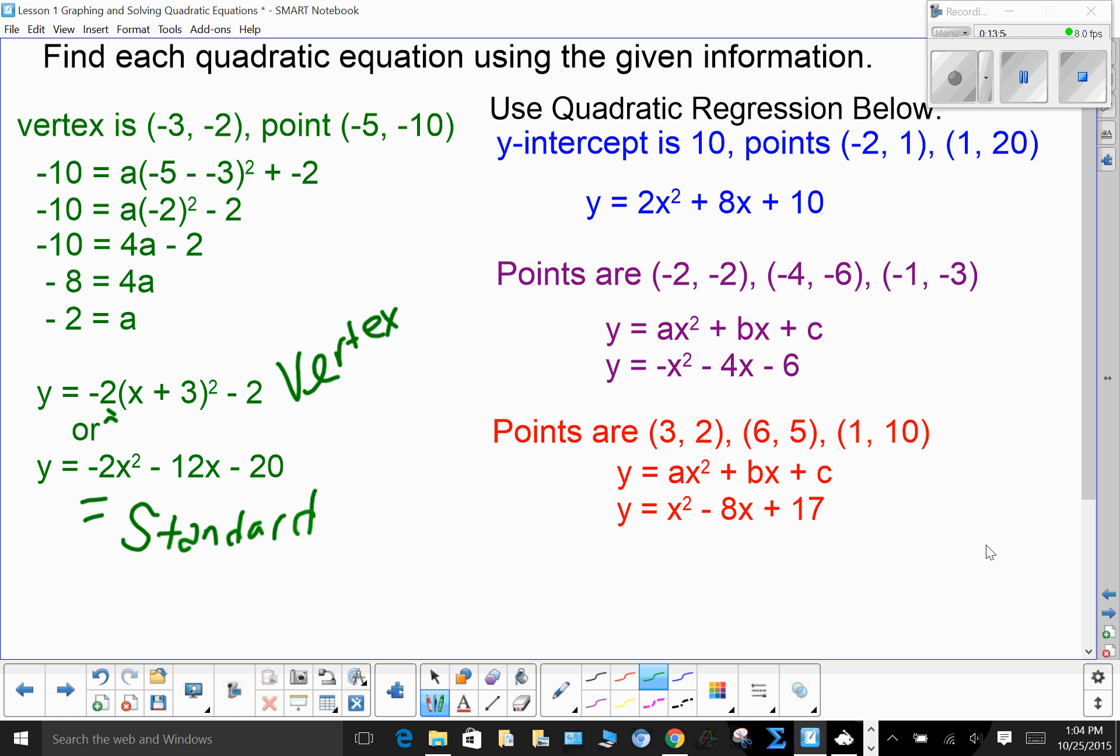And you should have gotten these answers. Again, it would have given you a is 2, b is 8, c is 10. a is -1, b is -4, c is -6. a is 1, b is -8, c is 17.